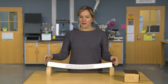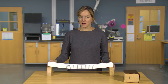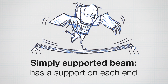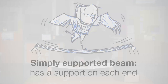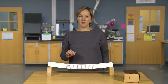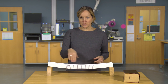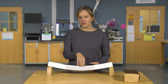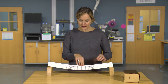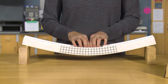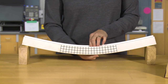So what happens when I bend this beam, and what types of forces are induced? This is a simply supported beam — it's just got two supports on the sides — and it has a grid on it that'll help us understand what's happening. As I push on the beam, take a look at the grid. We should see that the lines on the bottom get longer and the lines on the top get shorter.